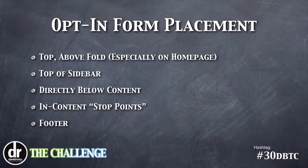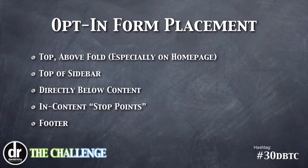Another great place for opt-in form placement is directly below your content. We've talked about this when it comes to having a call to action, and getting onto a list is a call to action. So it basically looks like it's almost part of your blog post, right at the tail end, but before the comments begin. The idea is that it is a stop point — as the person reads down to the bottom, they're left with something to do, and that's why you give them a call to action there.